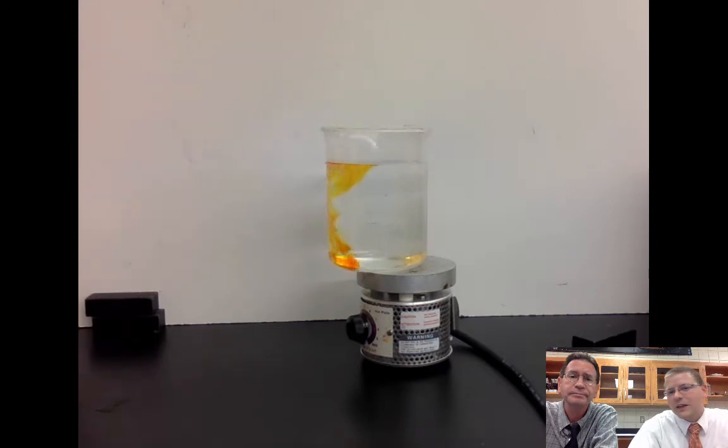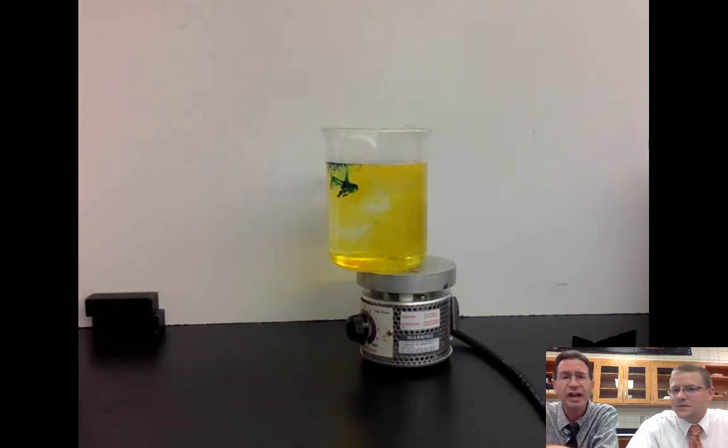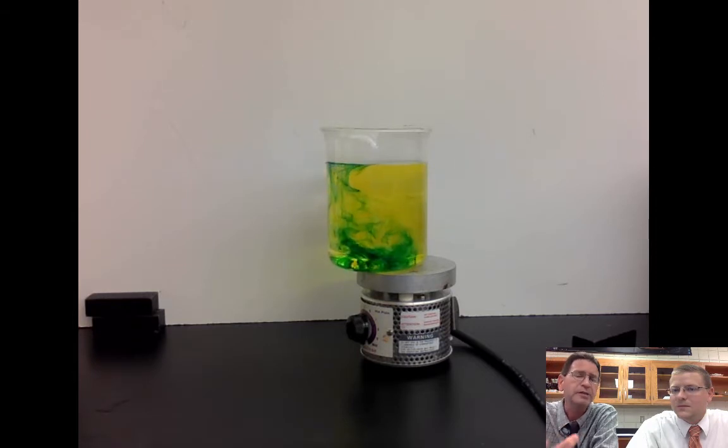But when it gets over that energy source, you can see that you get this circular pattern happening. You're getting hot water to rise and cooler water to sink. That's not saying that the water is cold on the side where it's sinking, but relatively it's cooler on that side. It has less energy. Less energy means that the material is more dense.